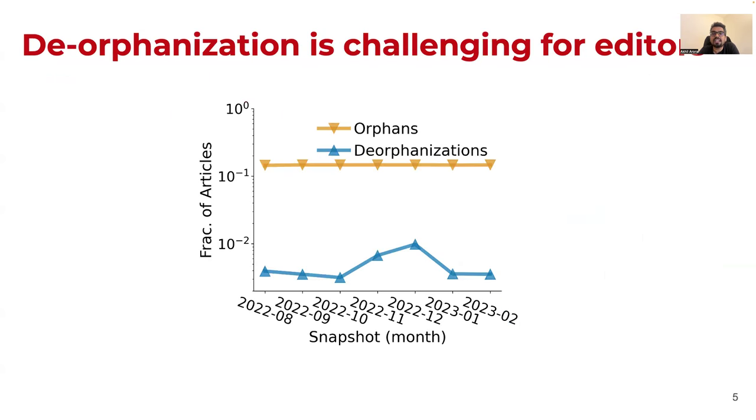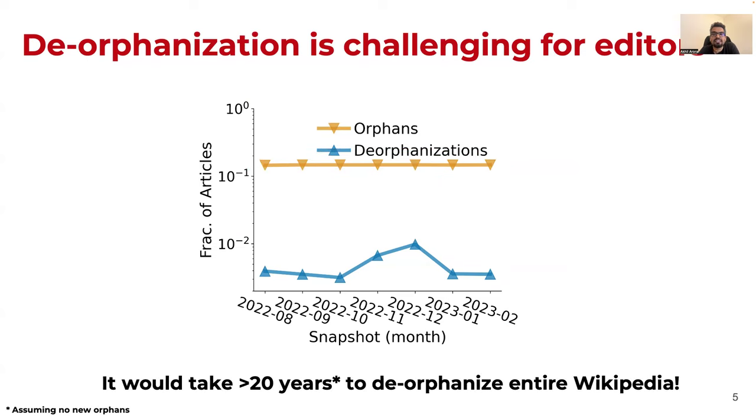Next, de-orphanization is quite challenging for editors, which is evidenced by the exorbitantly low rate of de-orphanization, which is as low as around 0.2%. While editors are able to de-orphanize many thousand articles, new articles are also added, and thus the overall fraction of orphans stays approximately constant. The grim figure here is that at this rate, it would take more than 20 years to de-orphanize entire Wikipedia. But I'm digressing. Let's go back to the visibility of orphan articles, which is where we started our discussion.